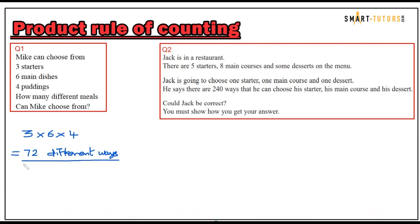Question number two: Jack is in a restaurant. There are five starters, eight main courses, and some desserts on the menu — the number of desserts is not given. Jack is going to choose one starter, one main course, and one dessert. He says there are 240 ways he can choose his meal.